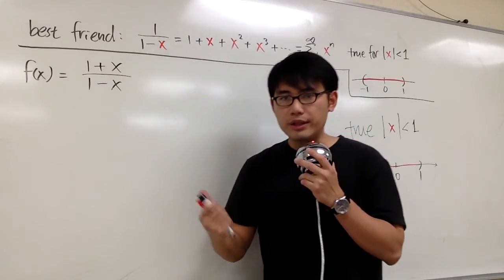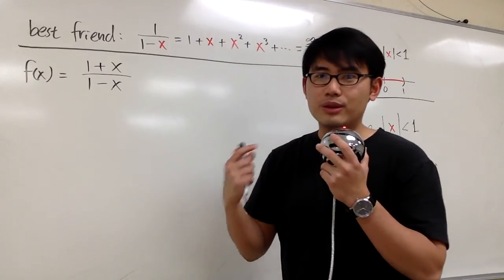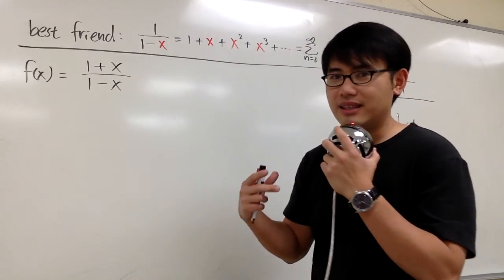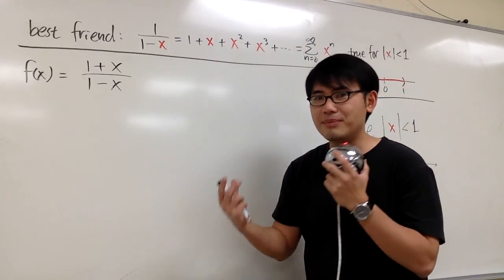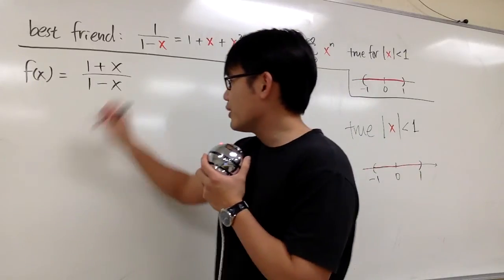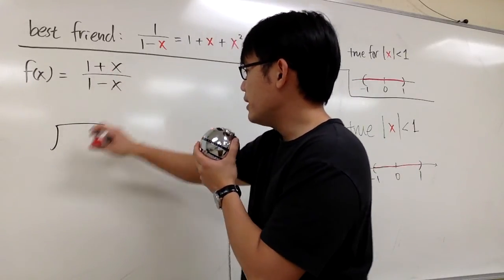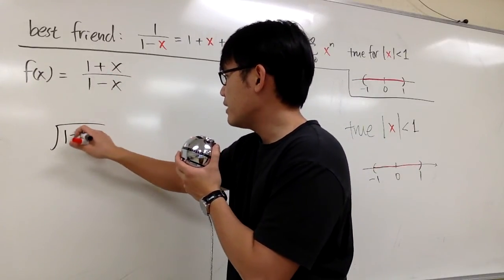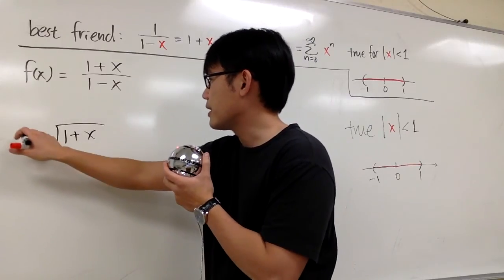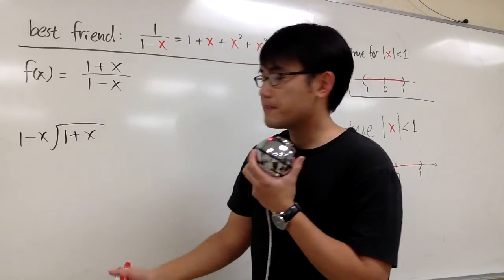What we can do in this situation is use long division, and in this case we're lucky because it's going to work. So what we do is put the top inside — 1 plus x — and then the bottom is on the other side — 1 minus x — and we'll just go ahead and divide.